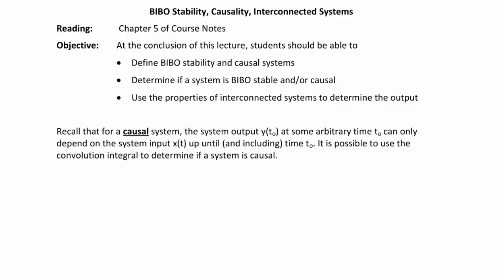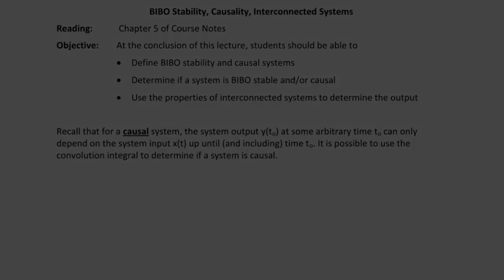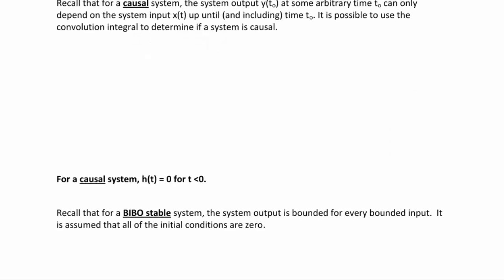Recalling for a causal system, the system output y(t₀) at some arbitrary time t₀ can only depend on the system input x(t) up till and including time t₀. It is possible to use the convolution integral to determine if a system is causal. The first step is to write the convolution integral: y(t) equals the integral from negative infinity to positive infinity of h(t minus lambda) times x(lambda) d-lambda.